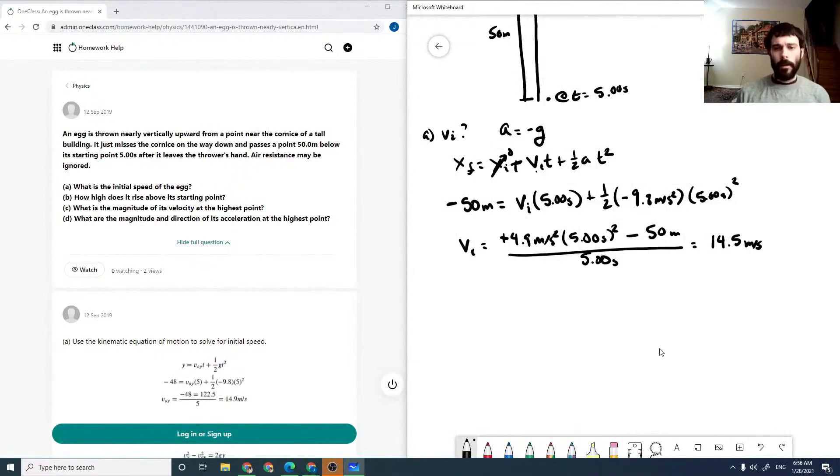And now how high does it rise above its starting point? So that would be solving for where vf equals 0. So vf equals vi plus at. So then t is equal to where vf is 0, so t is minus vi over a.